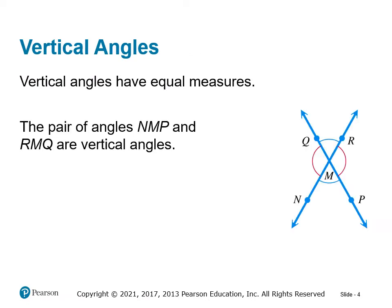Vertical angles have equal measures. Vertical angles are the angles that are created by the intersection of two lines and they are the angles that are opposite each other. In this diagram you can see two red angles on the left and the right, and two blue angles on the top and the bottom, created by this basically X-shaped intersection of two lines. The red angles are equal and the blue angles are equal.